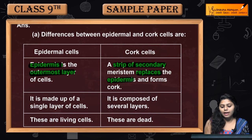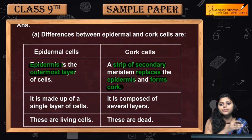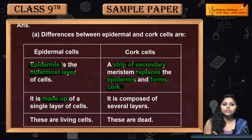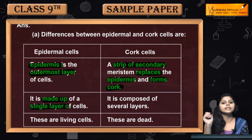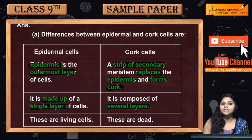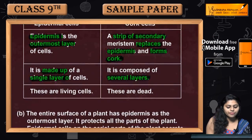Cork cells form the replacement of epidermis. Epidermal cells are made up of a single layer of cells — epidermis has a single layer. Cork cells are composed of several layers; there are many layers in cork cells.